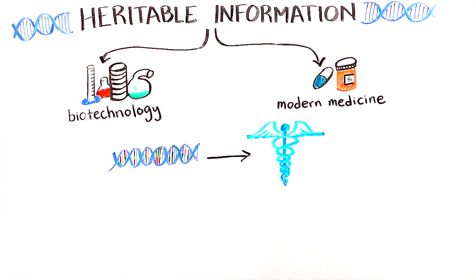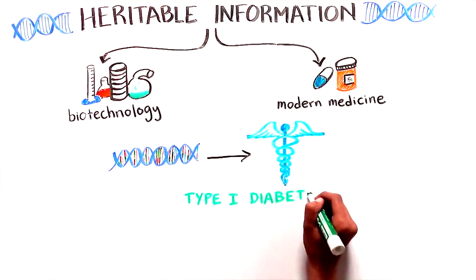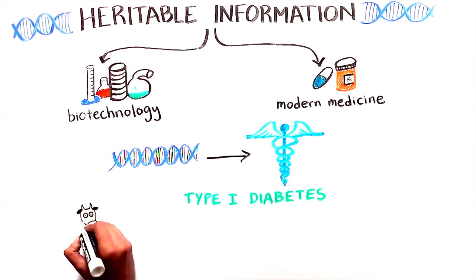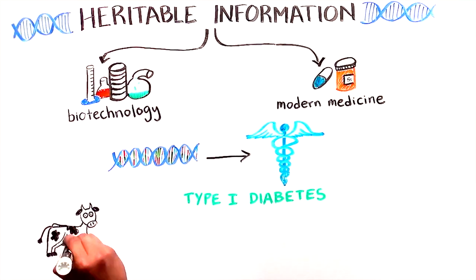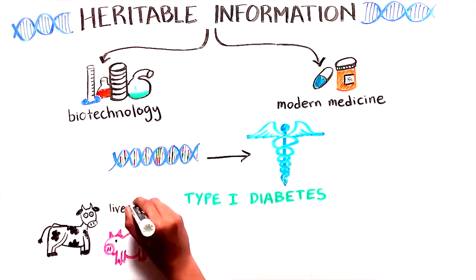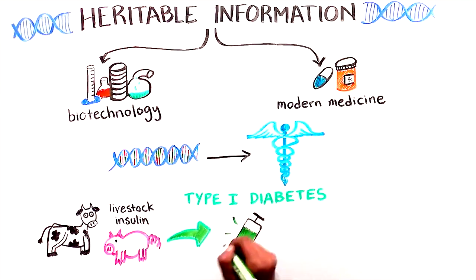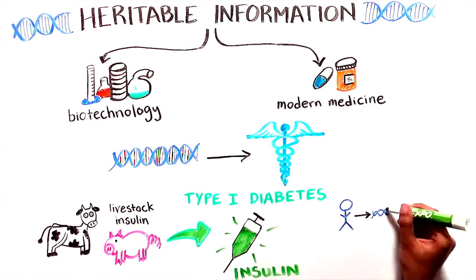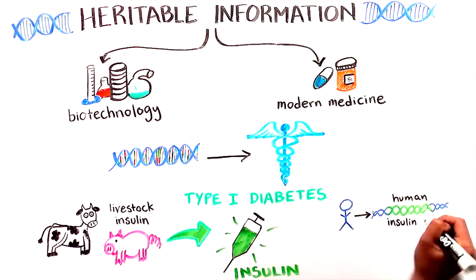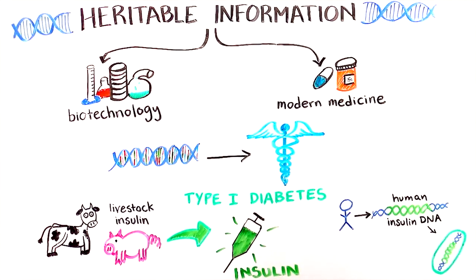One impactful example is in treating patients with type 1 diabetes who require daily insulin injections. Previously, insulin from livestock was used, but now human insulin DNA is transferred to bacteria which act as biological factories to produce human insulin for patients.